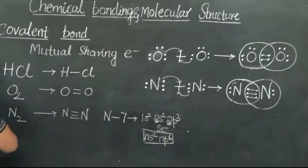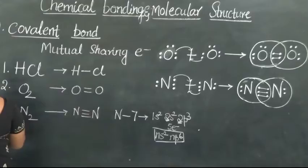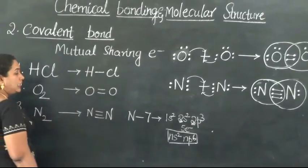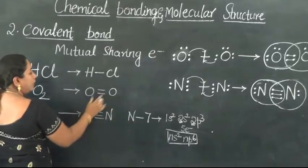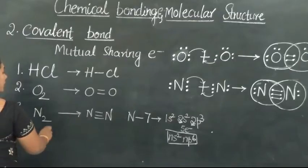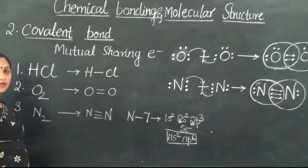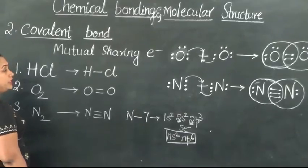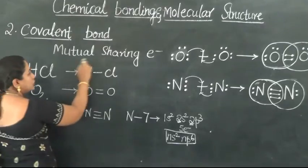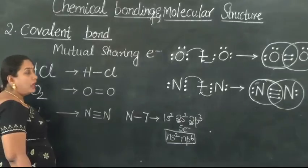So there are 3 types of covalent bonds based on the number of shared electrons. Singly covalently bonded molecules — we learned the example of HCl. Double covalently bonded molecules — we learned the example of the Oxygen molecule. And triply covalently bonded molecules — we learned the example of the Nitrogen molecule. In general, a covalent bond is formed by mutual sharing of electrons between the participating atoms.